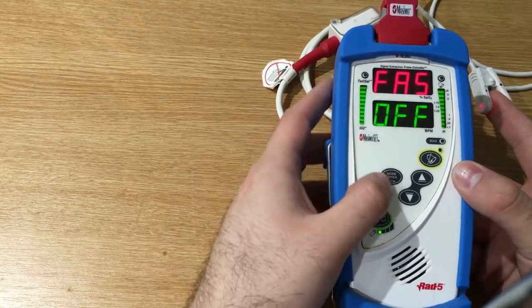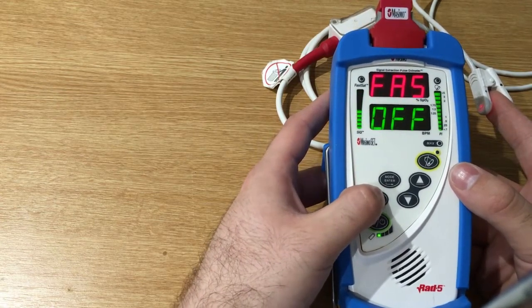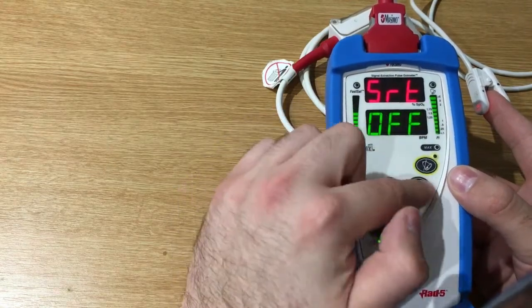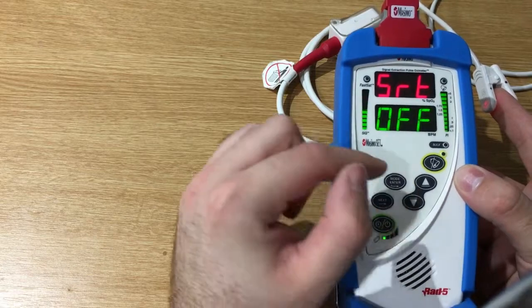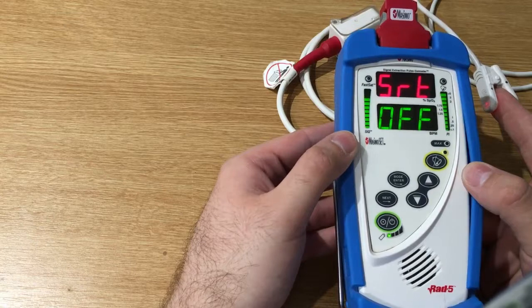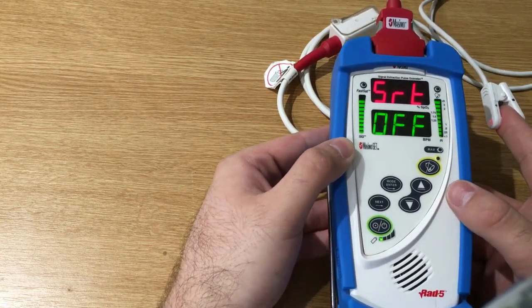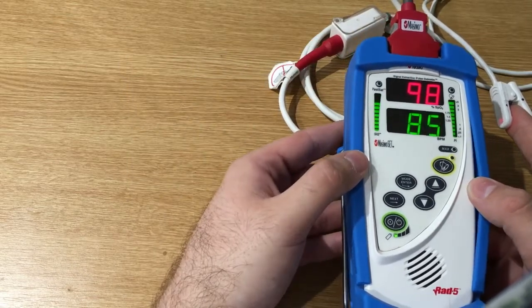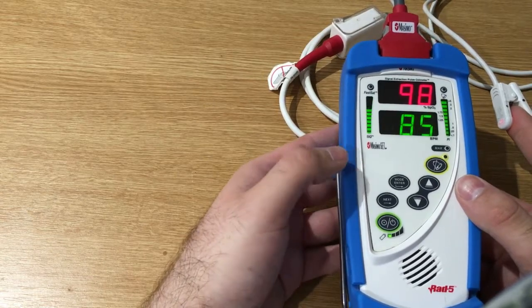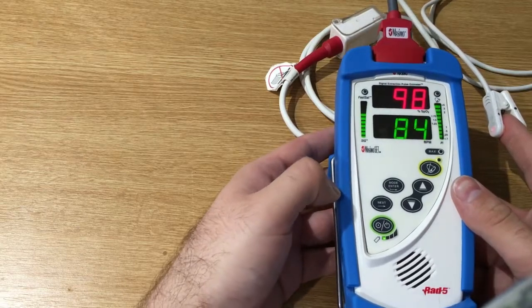And here we can enable or disable the fast sat. Here we can enable or disable the smart tone. So the smart tone basically is a feature that allows this pulse oximeter to identify the arterial wave under low signal-to-noise conditions.